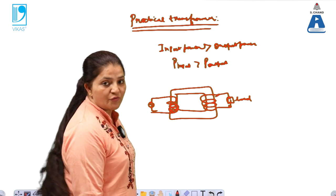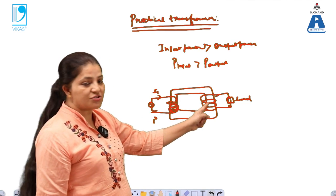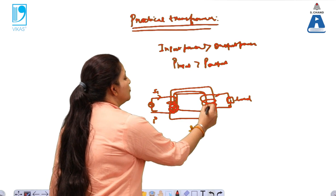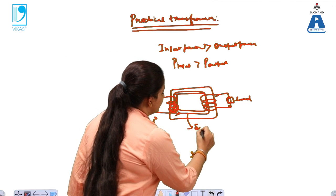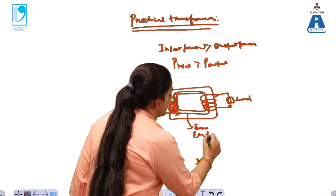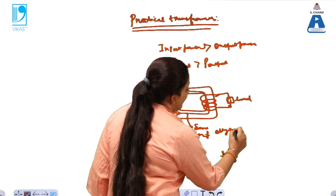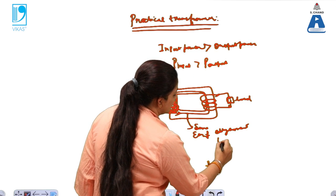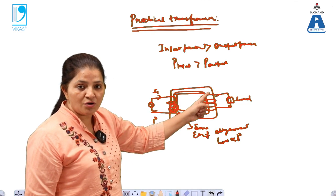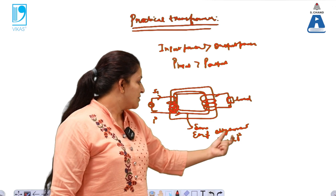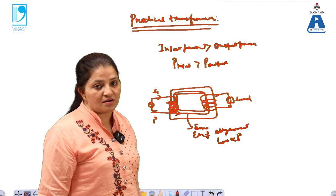When current I1 flows in the primary winding of the transformer, an EMF is induced in the core. Depending on the direction of current, this induced EMF produces some amount of eddy currents. In the case of eddy current loss, the loss is directly proportional to I squared, so there is some loss in the current.